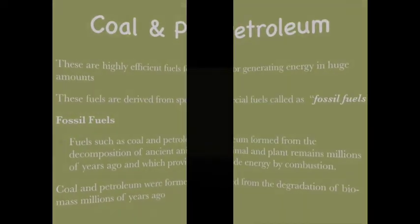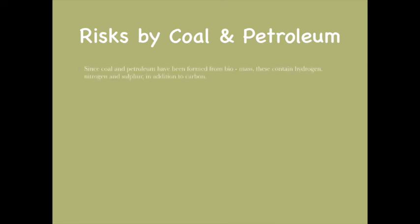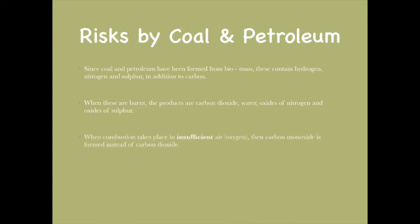The generation of coal and petroleum takes a lot of time. Since coal and petroleum have been formed by biomass, they contain hydrogen, nitrogen, and sulfur in addition to carbon. When these are burned, the products are carbon dioxide, water, oxides of nitrogen, and oxides of sulfur. When combustion takes place in insufficient oxygen, carbon monoxide is formed instead of carbon dioxide. The oxides of sulfur, nitrogen, and carbon monoxide are very poisonous at high concentrations. Carbon dioxide is a greenhouse gas, hence these products have to be used very judiciously.